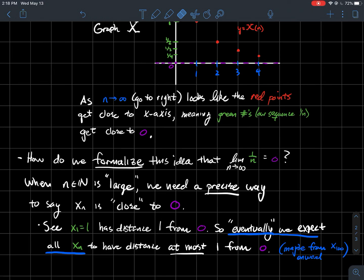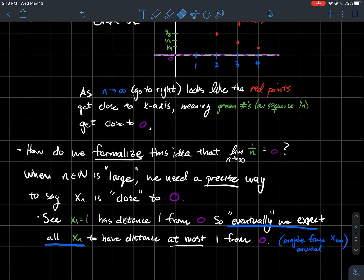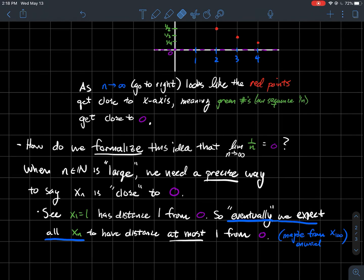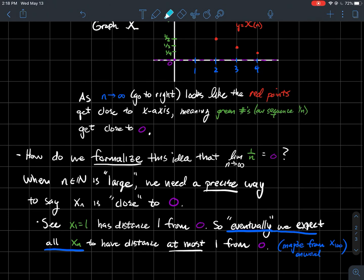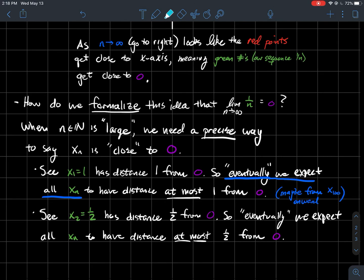So what I want to try to do is give you some intuition for what's behind this idea of being close. If you look at x₁, which is one, that has distance one away from your limit zero. So what we want to have happen is that eventually, maybe not immediately, but eventually down the line, I want all the terms in the sequence to have distance at most one from zero. So none of these red dots should ever pop out so that the distance from the x-axis is any more than one.